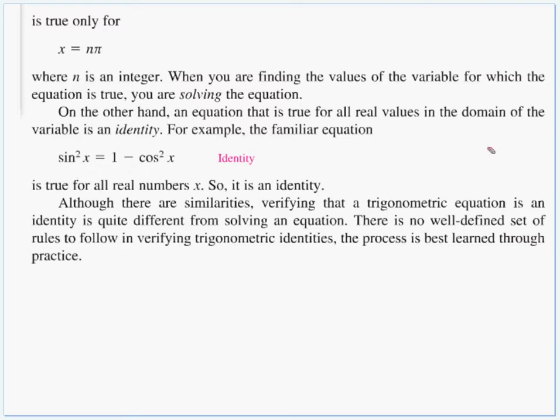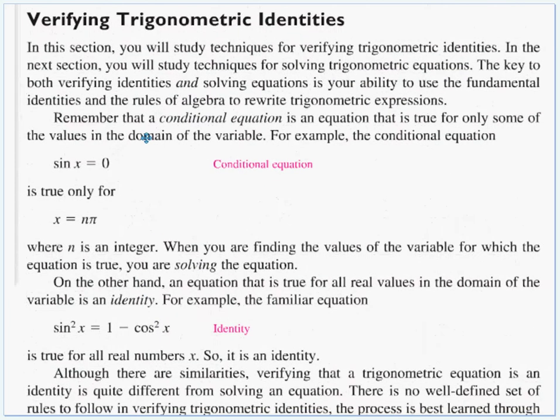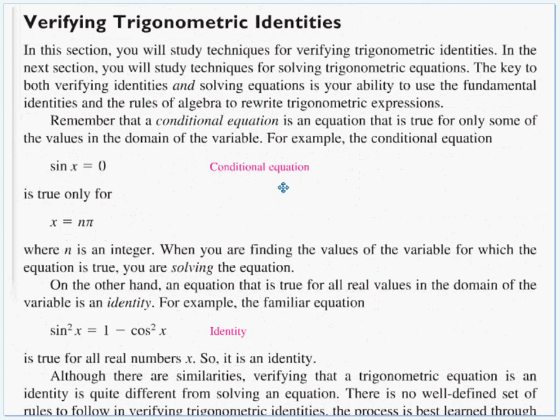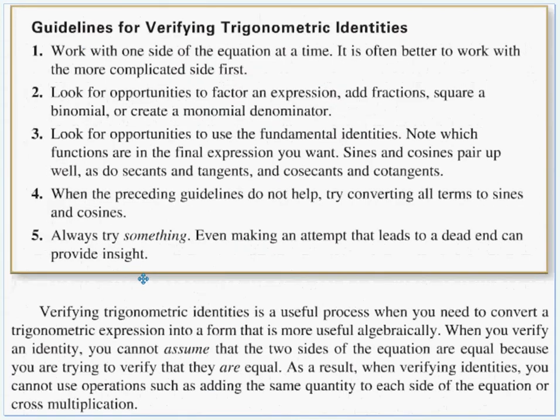There is no well-defined set of rules to follow in verifying trigonometric identities. The process is best learned through practice. And there are multiple ways to verify identities. Every year, somebody brings up some new way that I've never thought of myself or saw before in class. There's always more than one way to do a lot of these. So they do give us some guidelines here. Number one, work with one side of the equation at a time. I'm going to highlight that. I cannot stress that enough.